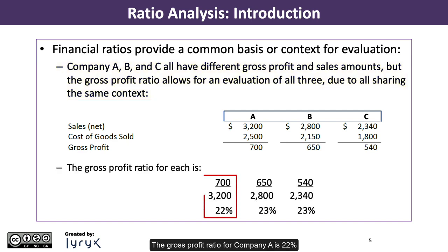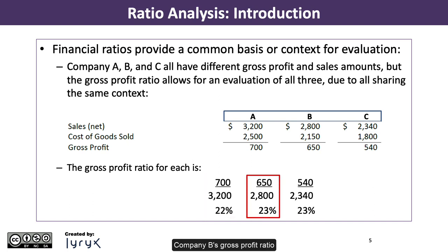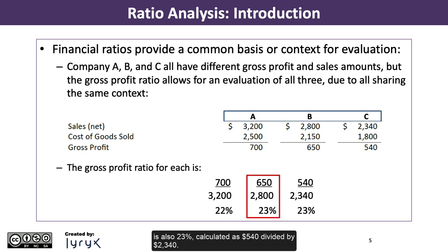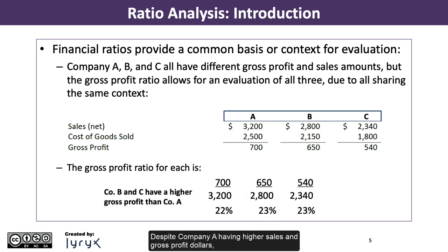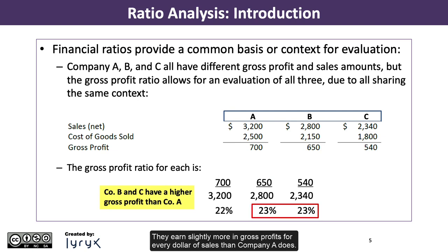The gross profit ratio for company A is 22%, calculated as $700 divided by $3,200. Company B's gross profit ratio is 23%, calculated as $650 divided by $2,800. And company C's gross profit ratio is also 23%, calculated as $540 divided by $2,340. Despite company A having higher sales and gross profit dollars, companies B and C both have higher gross profit ratios than company A. They earn slightly more in gross profits for every dollar of sales than company A does.